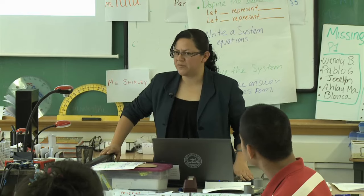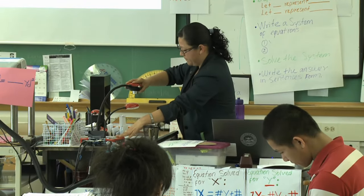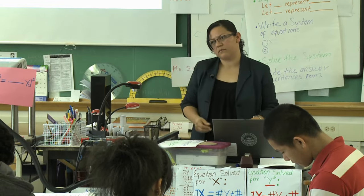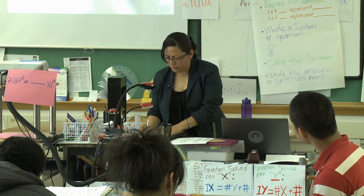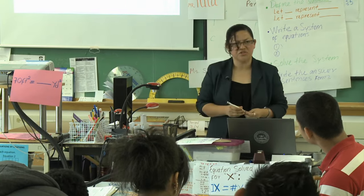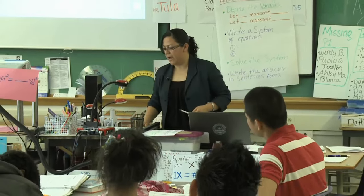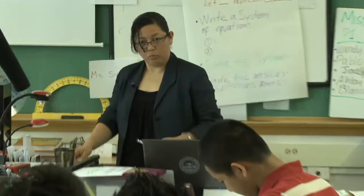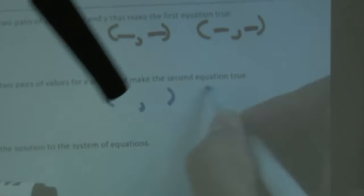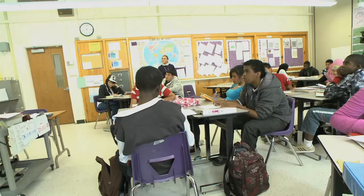How many equations do you have? Two. How many explanations are you going to have? Two. Gala, would you please read number two? Find two pairs of values for X and Y that make the first equation true. At the end, you're going to have two points with numbers. Carla, would you please read number three? Find two pairs of values for X and Y that make the second equation true — same thing, you're going to find two pairs that make the second equation true.